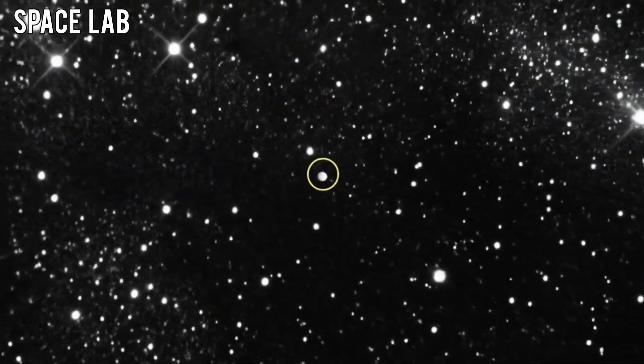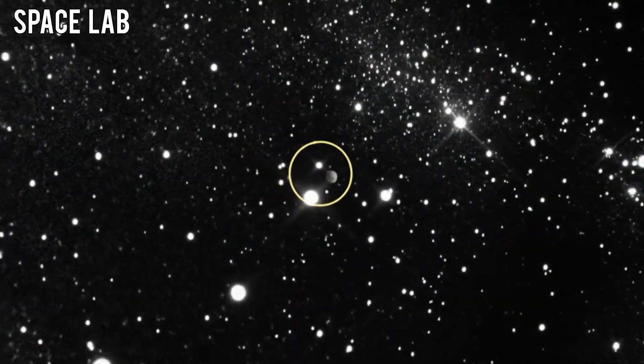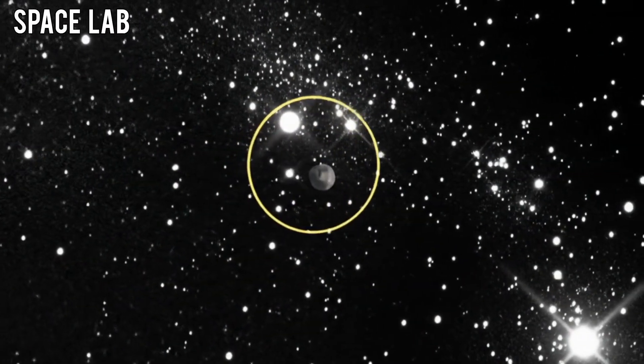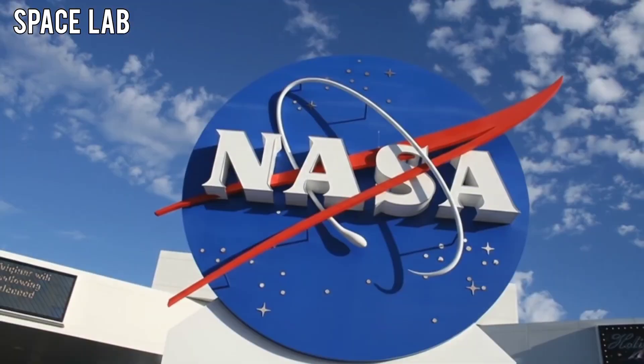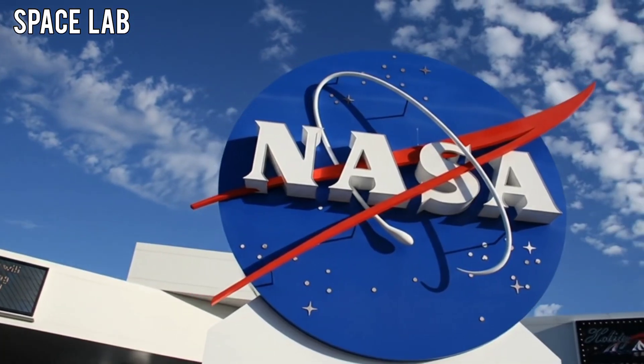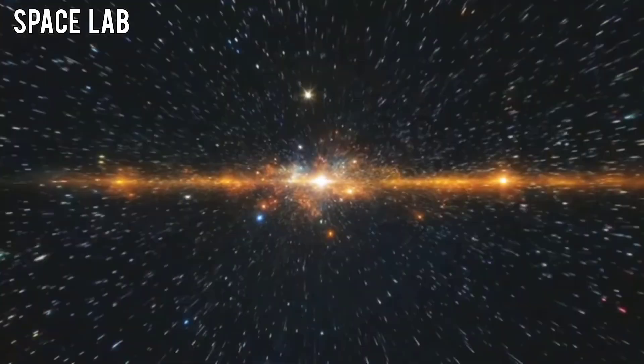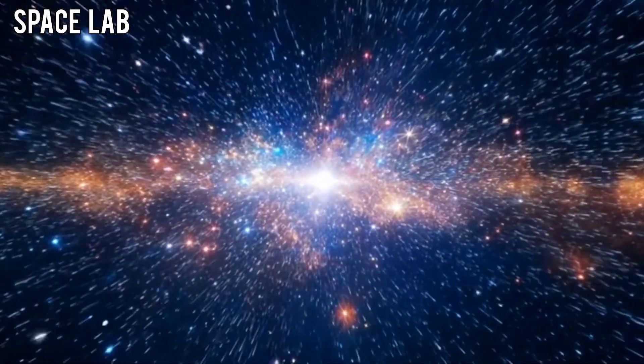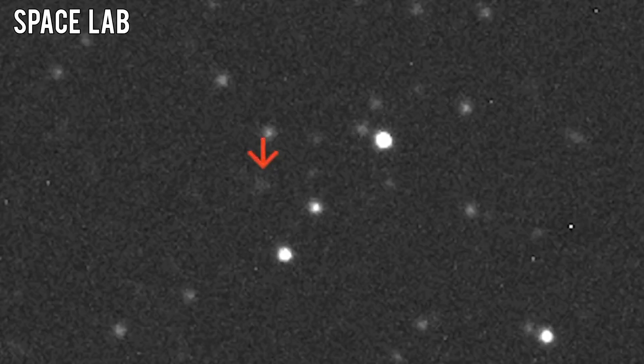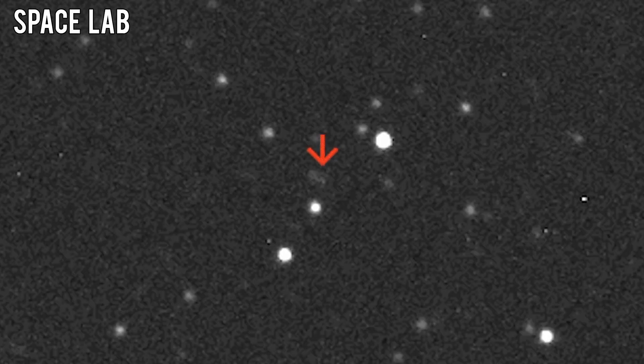It's called 31a Tadlus, a celestial object once believed to be a dying fragment of rock and ice. But over the past few weeks, NASA and the European Space Agency have detected something that challenges every known law of astrophysics. 31a Tadlus is interacting with the Sun.